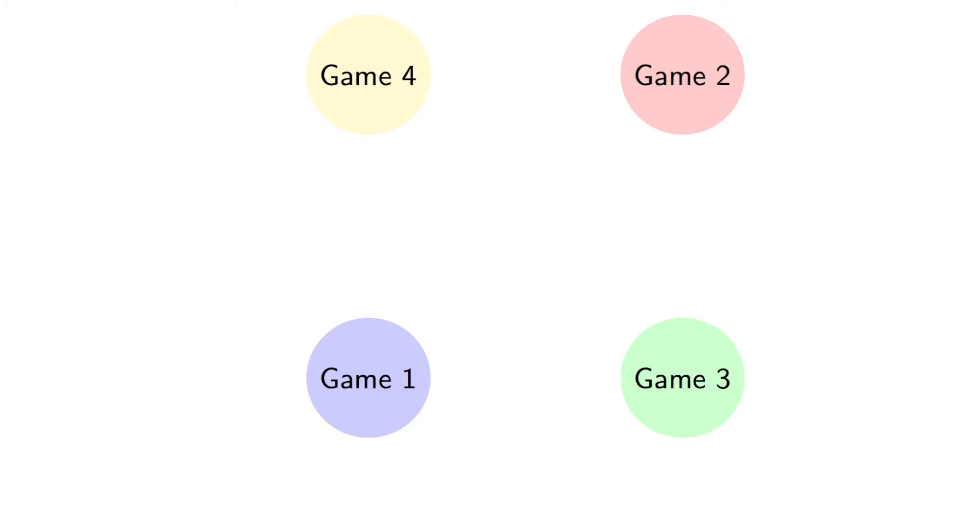So here, for example, we have four games. These represent the states of our stochastic game. In a matter of two players, they'll play game one, and they'll choose a particular strategy pair that will give them some utility, and furthermore will indicate the probability with which they move to a different state.